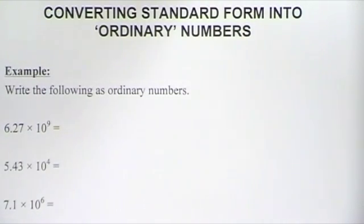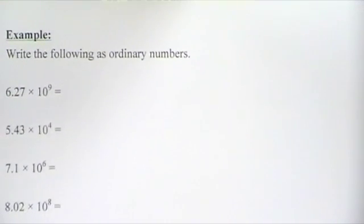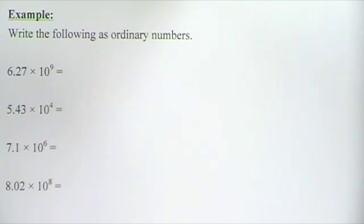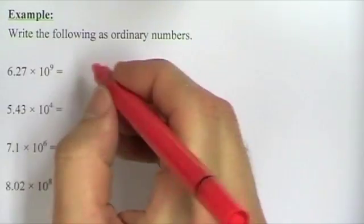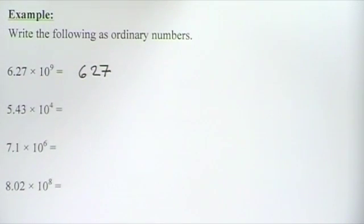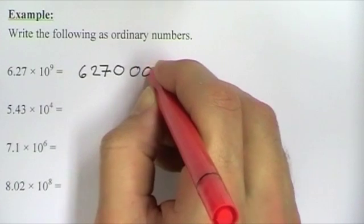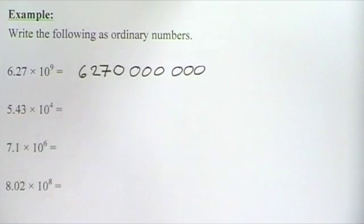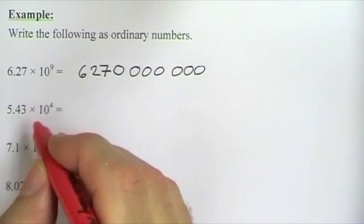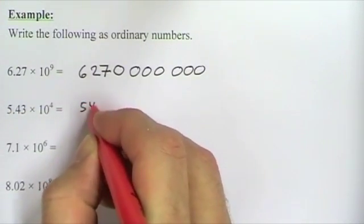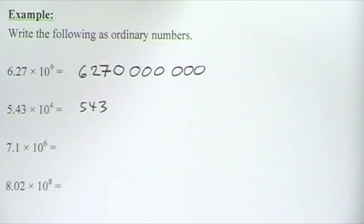We can do the process backwards and convert standard form numbers into ordinary numbers. For example, 6.27 times 10 to the 9 means we multiply 6.27 by 10 nine times. Multiplying twice gives 627; we then add another 7 noughts to get 6,270,000,000. For 5.43 times 10 to the 4: multiplying by 2 powers of 10 gives 543, then we add 2 more noughts to get 54,300.